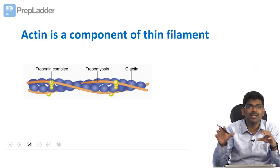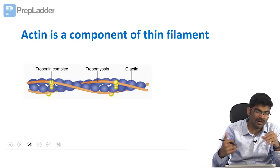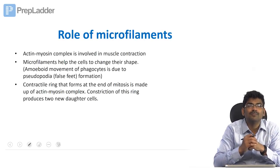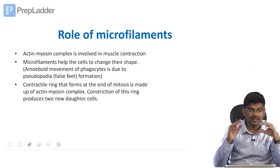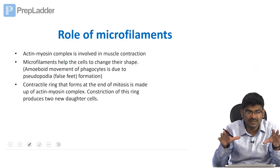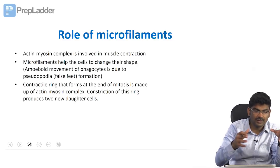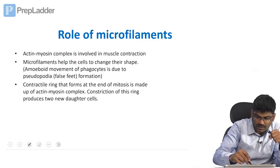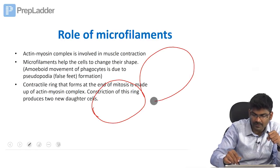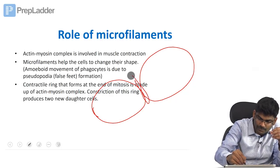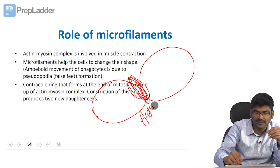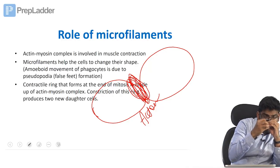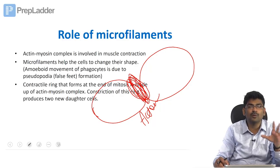Actin is a component of the thin filament in muscles — actin forms the thin filament. Actin is involved in muscle contraction along with myosin. Microfilaments help in changing the shape of cells; for example, amoeboid movement of phagocytes is due to pseudopod formation. During mitosis, the two daughter cells are briefly connected by an actomyosin complex known as the contractile ring, which is also due to actomyosin.